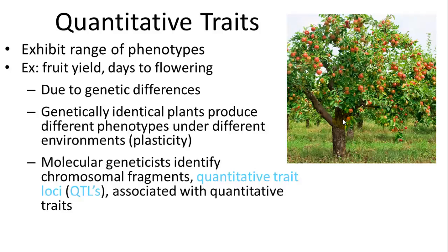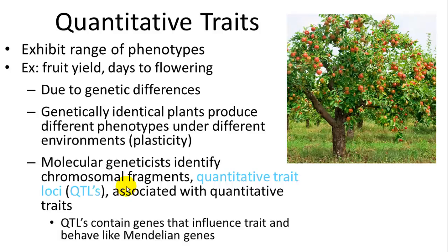Molecular geneticists identify chromosomal fragments called quantitative trait loci, or QTLs, associated with these quantitative traits — a group of genes which combined will affect how much fruit is produced by a tree. These QTLs contain genes that influence the trait and behave just like Mendelian genetics even though there's a group of them. This is important for agriculture because you want to find which genes produce the best fruit and breed those.